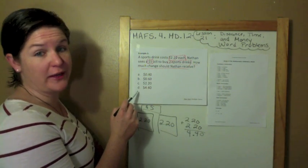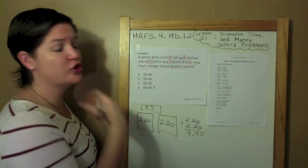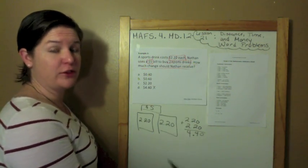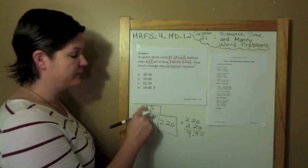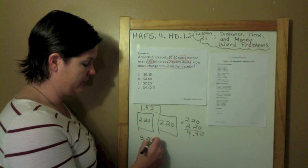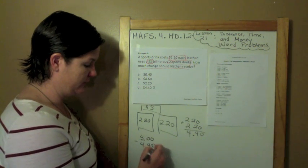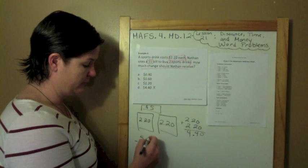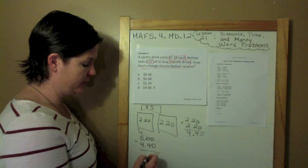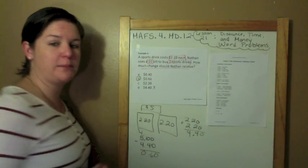But that's not what the question is asking us to do. It says how much change should he receive? When they ring it up at the register, this is the cost, but he has $5. So now we need to subtract the amount that he has. Zero minus four we can't do that, so we regroup. That becomes 10. Ten minus four is six. So he would receive 60 cents back.